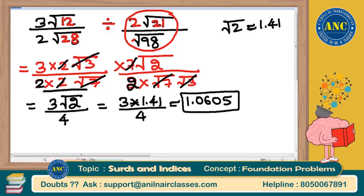Whether to stop at 3√2 / 4 or compute the decimal depends purely on how the answer options are given. We are still in level 1 questions and will continue for the next few minutes.